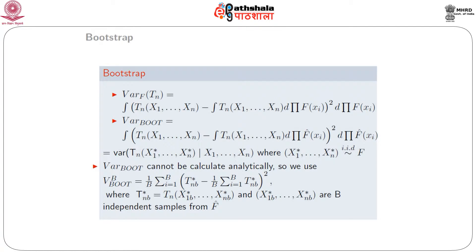Under bootstrap, the variance of t_n, assuming that the distribution function is f, can be calculated as the integral of (t_n(x1,...,xn) minus the mean of t_n)^2 integrated over the product of f(x_i). For the bootstrap variance, denoted v_boot, the same expression applies but f is replaced by f-hat, which is an estimator of f. If v_boot cannot be calculated analytically, then we get v_boot based on B bootstrap samples, where these B bootstrap samples are drawn from x1, x2, ..., xn repeatedly with replacement.